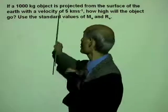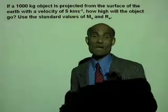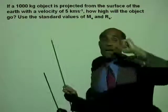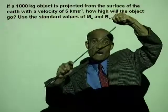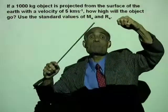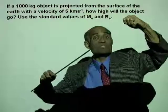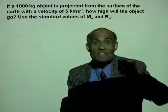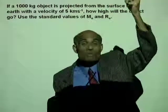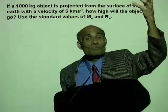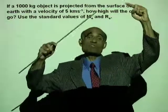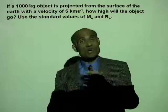The object has kinetic energy because we give it this velocity. If it rises to a certain height H, at that height its potential energy is − GM_E m / (R_E + H). When it reaches the highest point, its speed will be zero, so its kinetic energy is zero. We find total energy on the surface and at height H, then use conservation of energy to solve for H.